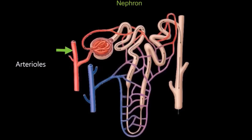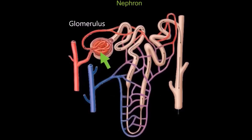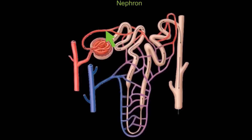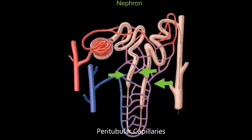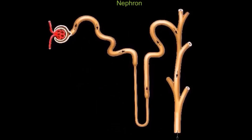Cardiovascular system structures associated with the nephron include the arterioles, which are tiny branches off of the renal artery. Branching from an arteriole is the afferent arteriole, and the afferent arteriole leads into a ball of capillaries called the glomerulus. Exiting the glomerulus is another artery called the efferent arteriole, and the efferent arteriole will give rise to peritubular capillaries, venules which merge to form the renal vein, and peritubular capillaries which surround the tubes of the nephron.